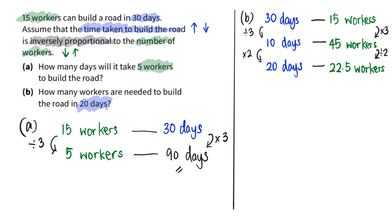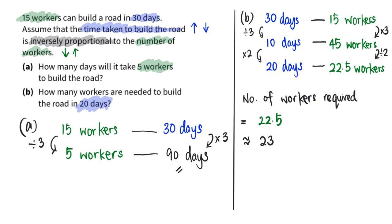However, can we realistically have half a worker? No. So the minimum number of workers needed to build the road in 20 days — bearing in mind that 22 workers would not be enough to complete it in 20 days — means we round up to 23 workers as the final answer, because it is not possible for someone to be half a worker. That completes this question. If you like this video, give it a thumbs up and remember to subscribe. Thank you and have a nice day.